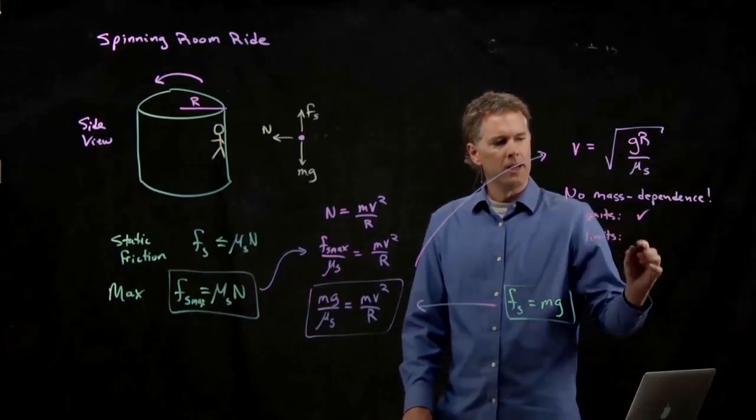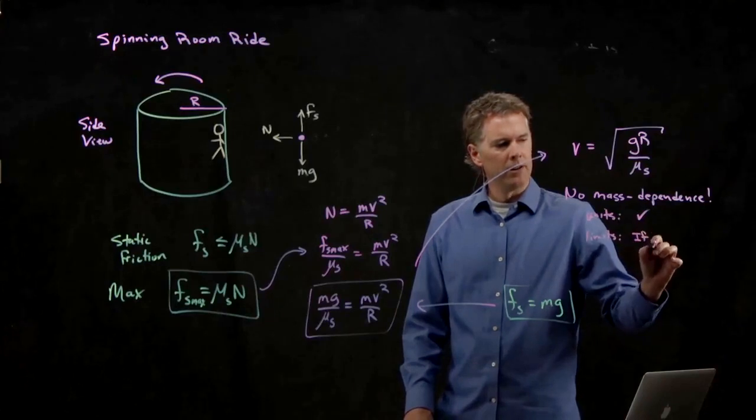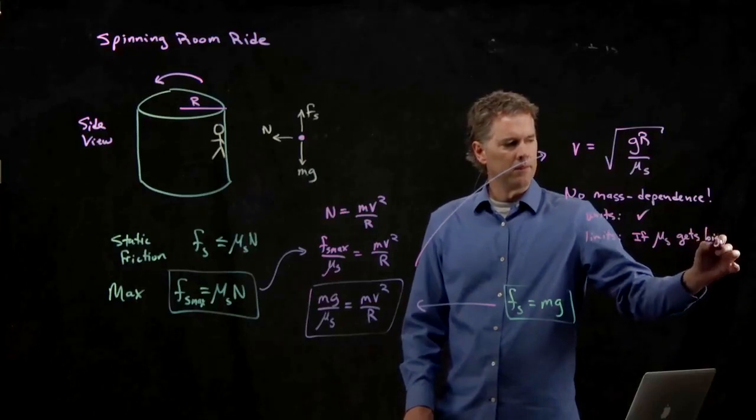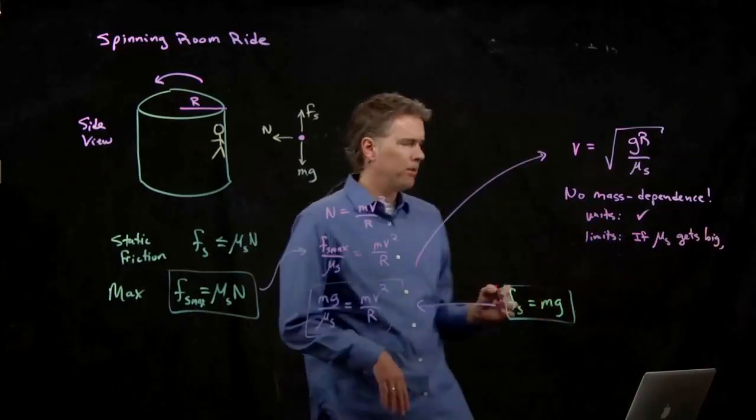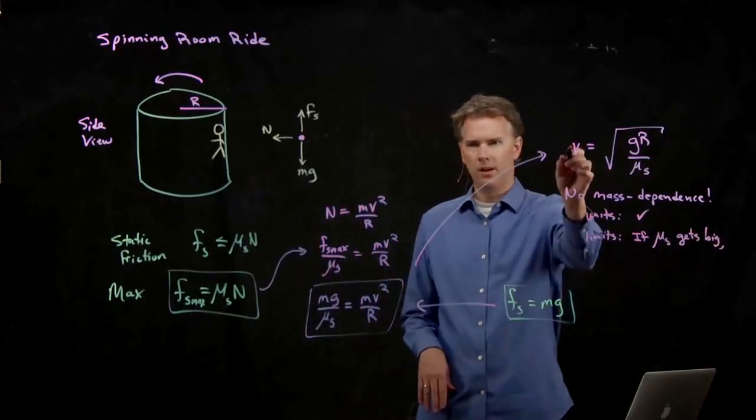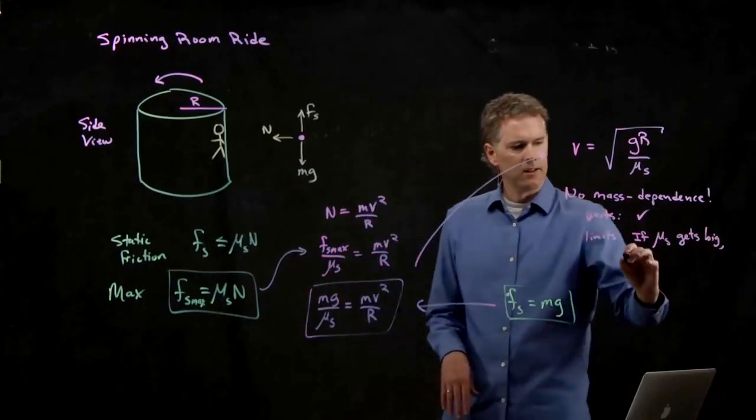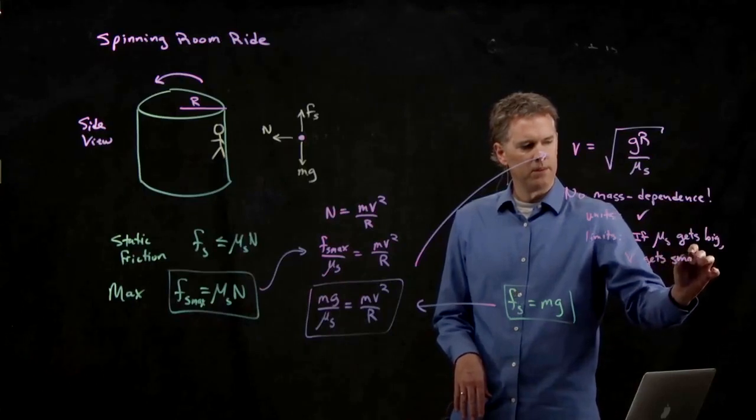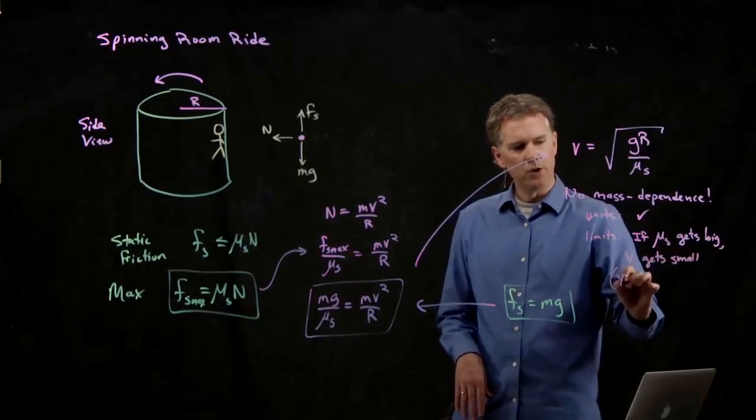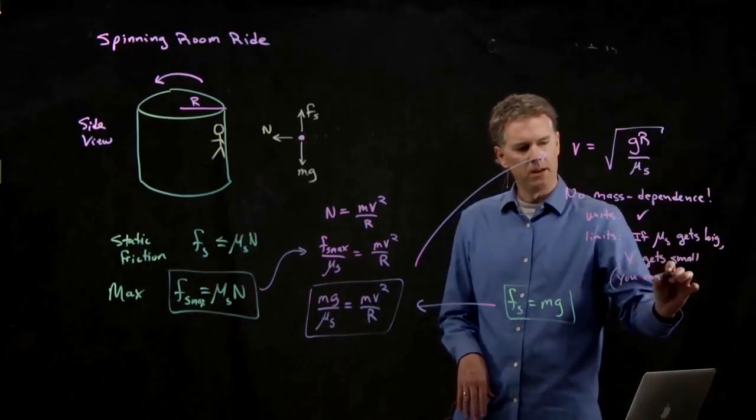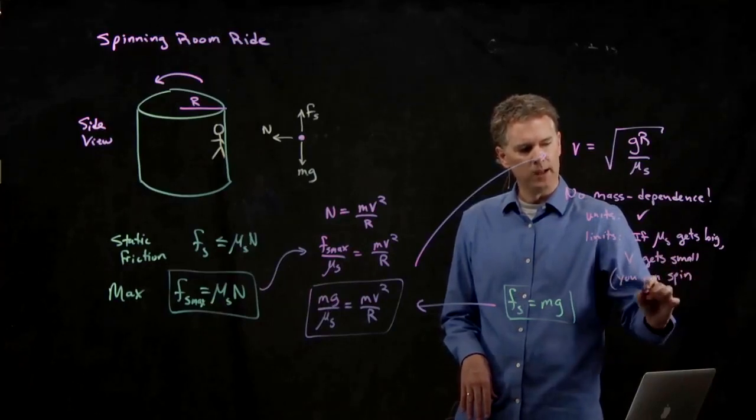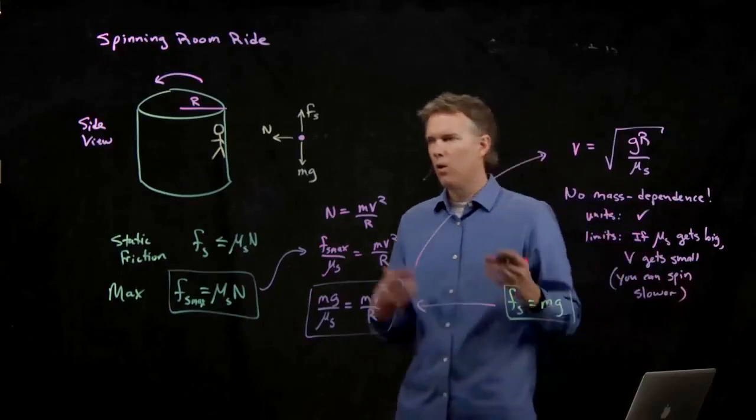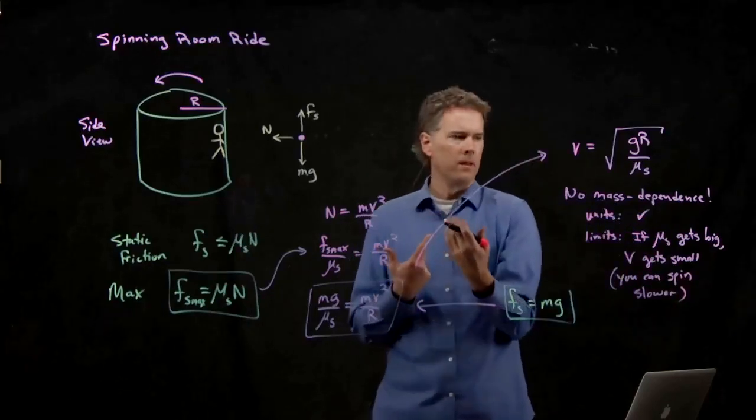And the limits look pretty good. Namely, if mu S gets big, what happens to the velocity? It gets small. In other words, you can spin much more slowly.